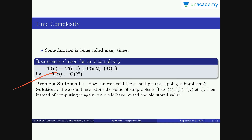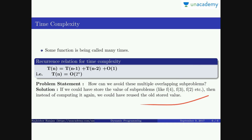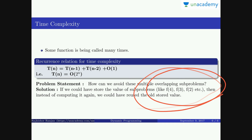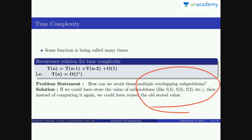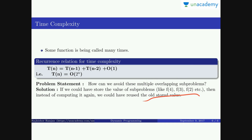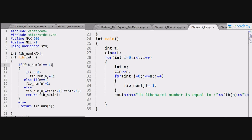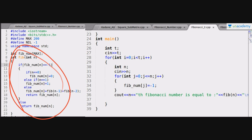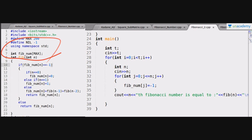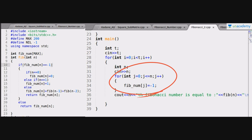The solution is: if we could store the value of sub-problems like Fib(4), Fib(3), Fib(2), etc., then instead of computing them again and again, we could use the already stored value. Whenever a sub-problem is called the second time, we have already stored its value from the first computation, so there is no need to call those functions again. Here we have created a global array fib_num, and in main we initialize all values of fib_num to minus one, to store all sub-problem values in this array.